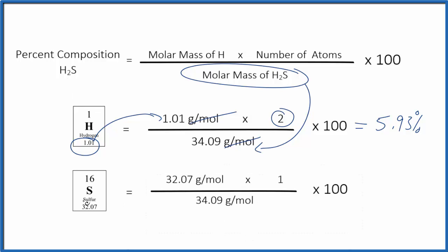So for the sulfur, we have our atomic mass here. We only have one sulfur atom. This is the molar mass for H2S. Multiply, divide, then multiply by 100 to get 94.07%. And these two numbers, they should add up to 100% or be very close.